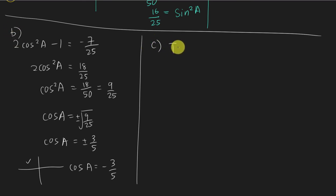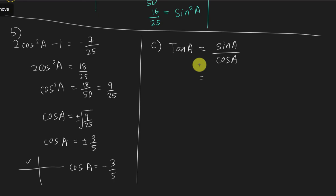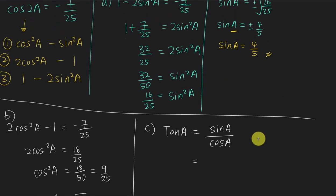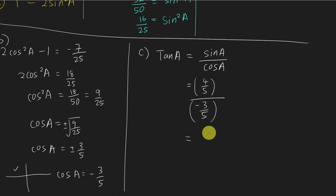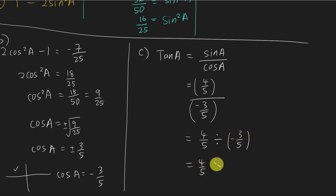The last part asks for tangent A. After finding sin A and cos A, you can easily get tangent A because tan A equals sin A over cos A. Sin A is positive 4 over 5 and cos A is negative 3 over 5. So I substitute: (4/5) divided by (negative 3/5). To divide, I flip the second fraction and multiply: 4 over 5 times negative 5 over 3. Simplifying gives a final answer of negative 4 over 3.